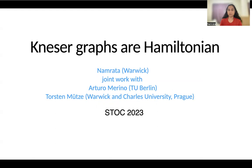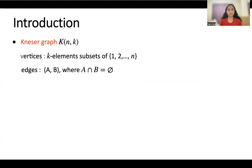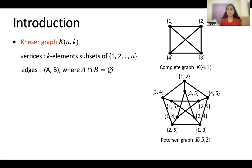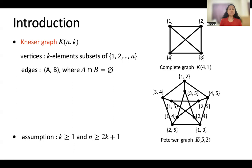Let me start by introducing what a Kneser graph is. It has two parameters n and k. The vertices are the k-element subsets of the set {1, ..., n} and edges are pairs of sets that are disjoint. For example, a complete graph is a Kneser graph with k equals 1, since all singleton sets are disjoint and we join each vertex with every other. The Petersen graph is the Kneser graph when n is 5 and k is 2, where vertices are two-element subsets of {1,...,5} with edges between disjoint subsets. We assume k is at least 1 and n is at least 2k+1 for the Kneser graph to be non-trivial.